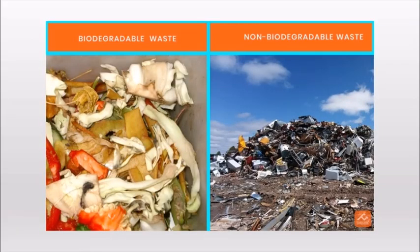Waste is divided mainly into two forms: biodegradable waste and non-biodegradable waste. Biodegradable waste is easily degraded by microbes and includes mostly kitchen waste — for example, soil, fruits, vegetables, food, dung, and parts of various plants. This type of waste is also called wet garbage or wet solid waste. When properly decomposed, we can get compost from it, which can be used for agricultural purposes.